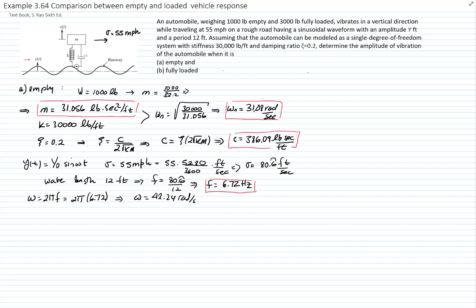With the excitation frequency and the natural frequency, we can calculate r, the frequency ratio. The frequency ratio is 42.24 divided by 31.08, which gives a value of r = 1.3589.